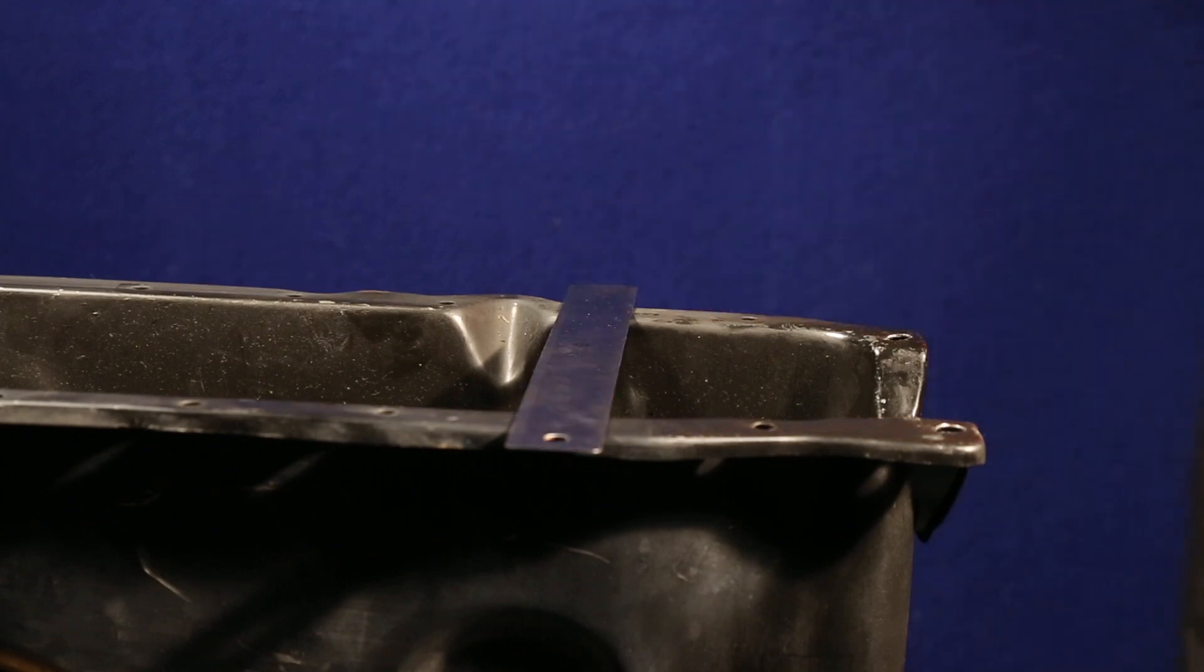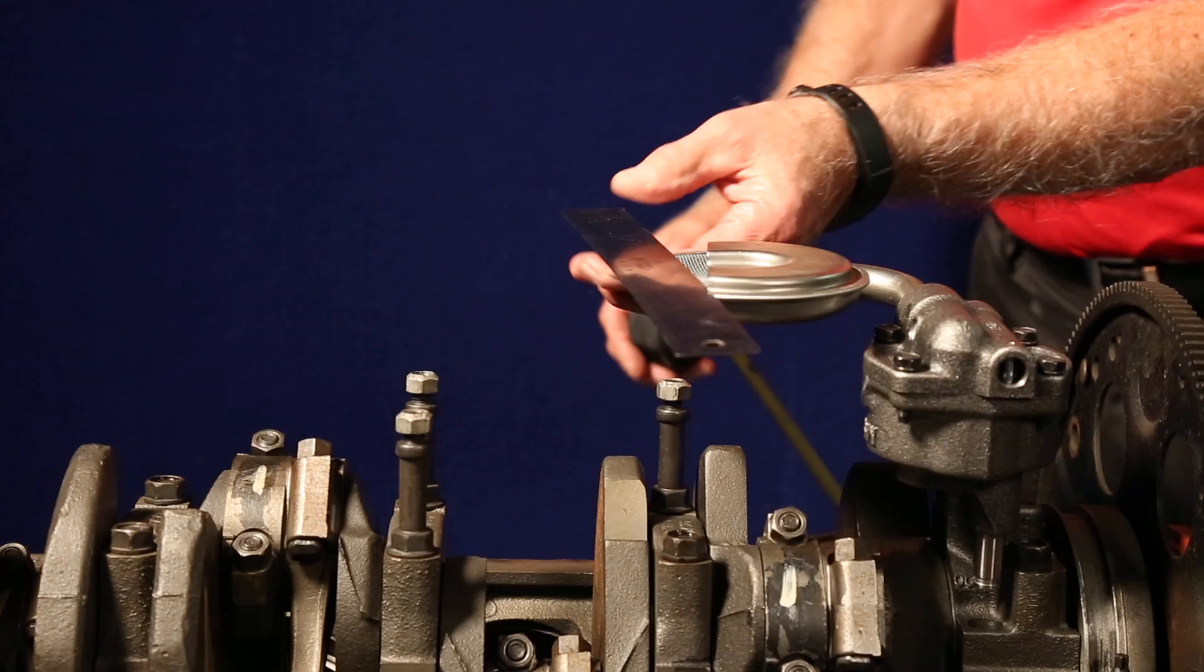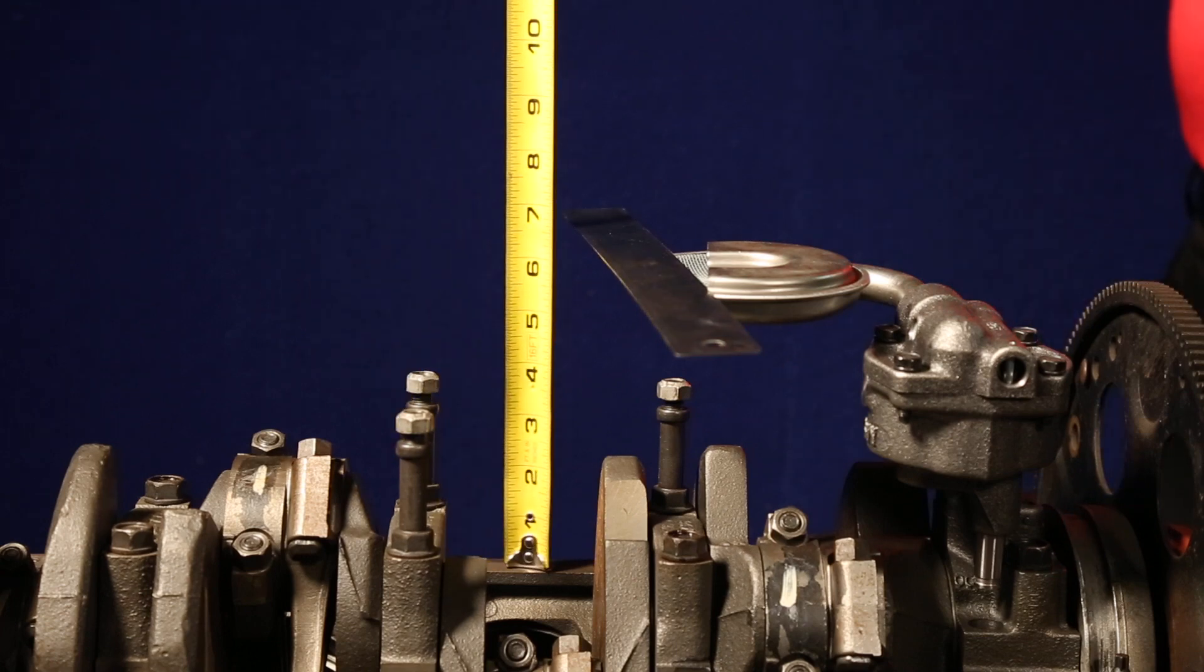Melling recommends 3/8 to 1/2 inch between the bottom of the pan and the screen face. Screen clearance can be checked by measuring the depth of the pan and the distance the screen face is from the pan rail.